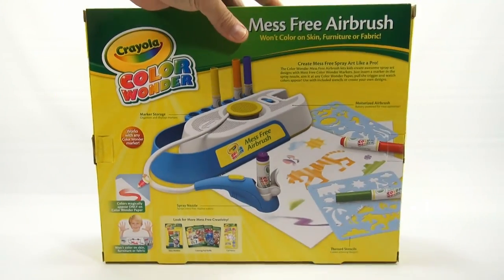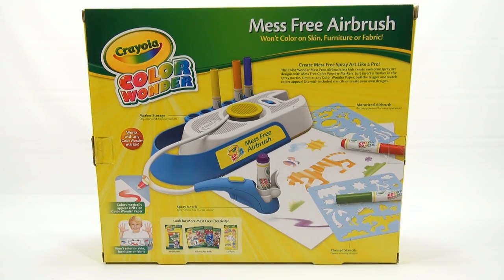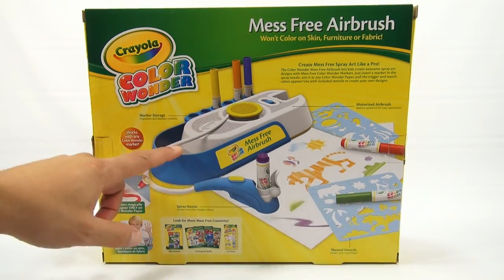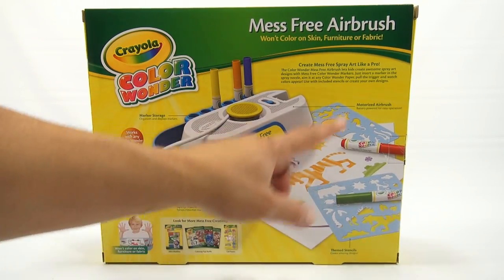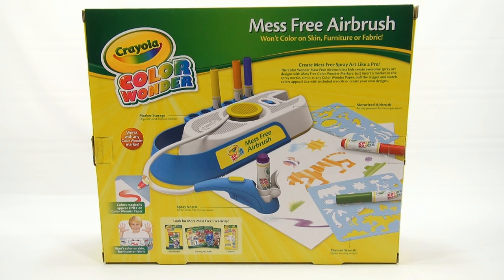Let me flip it around. This way we can see what's in the box. It looks like you get this main unit, your markers, paper, and stencils. Let's check it out. Let me get it all out of the box, and we'll get started.